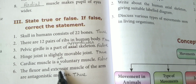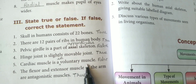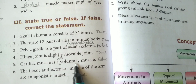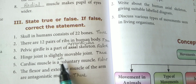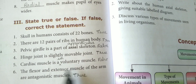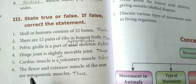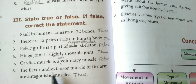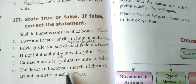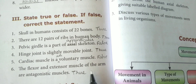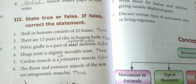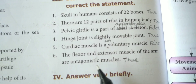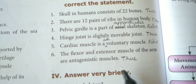Cardiac muscle is a voluntary muscle — that is false; it is an involuntary muscle. The flexor and the extensor muscles of the arms are antagonist muscles — True.